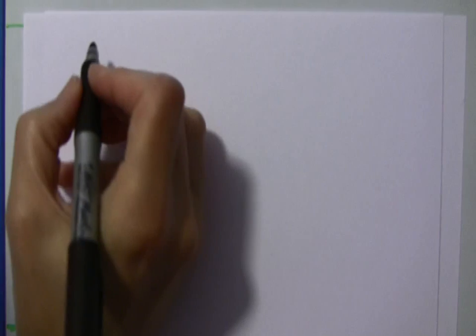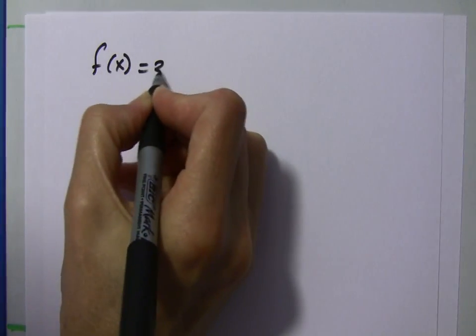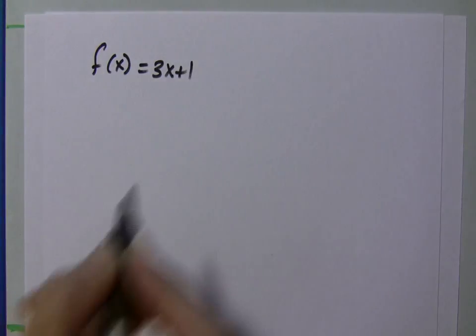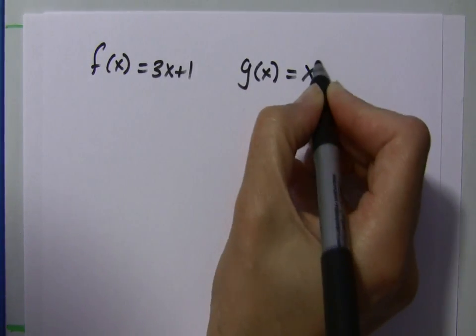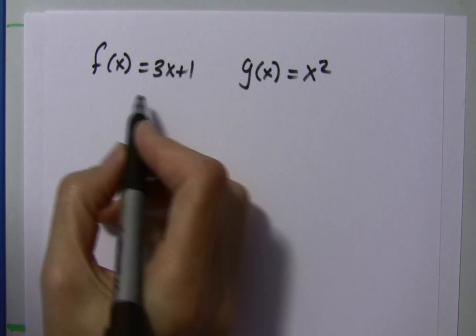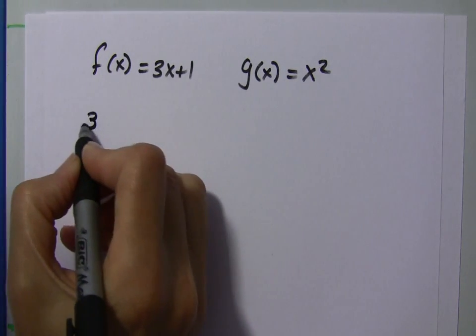So, let's look at one more. I'm going to find a piece of paper here. Let's use those same functions. f of x equals 3x plus 1, and g of x equals x squared. And let's say that we want, this is the third example.